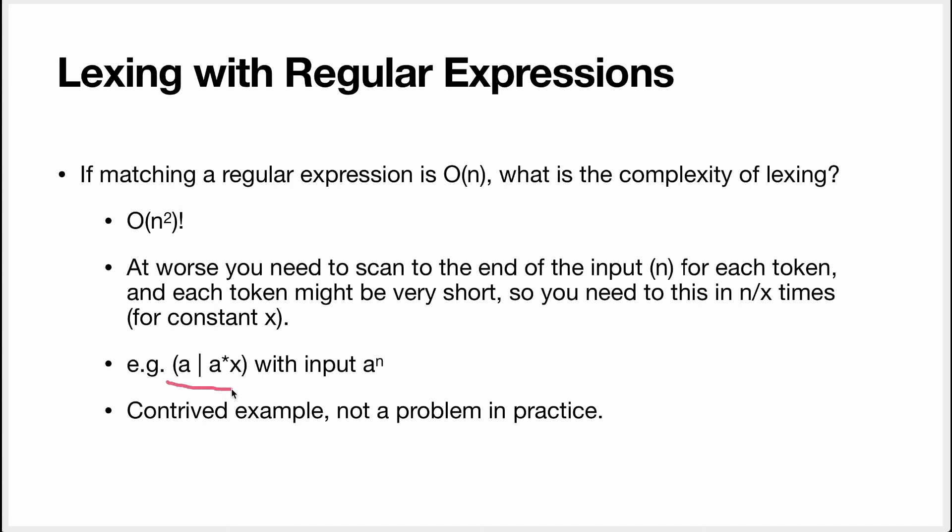Here's a simple example to see that. So the input is going to be a bunch of a's. And the regex that we have is either a, so that's a token type that's just an a, and then there's a token type that's a repetition of a's followed by an x.